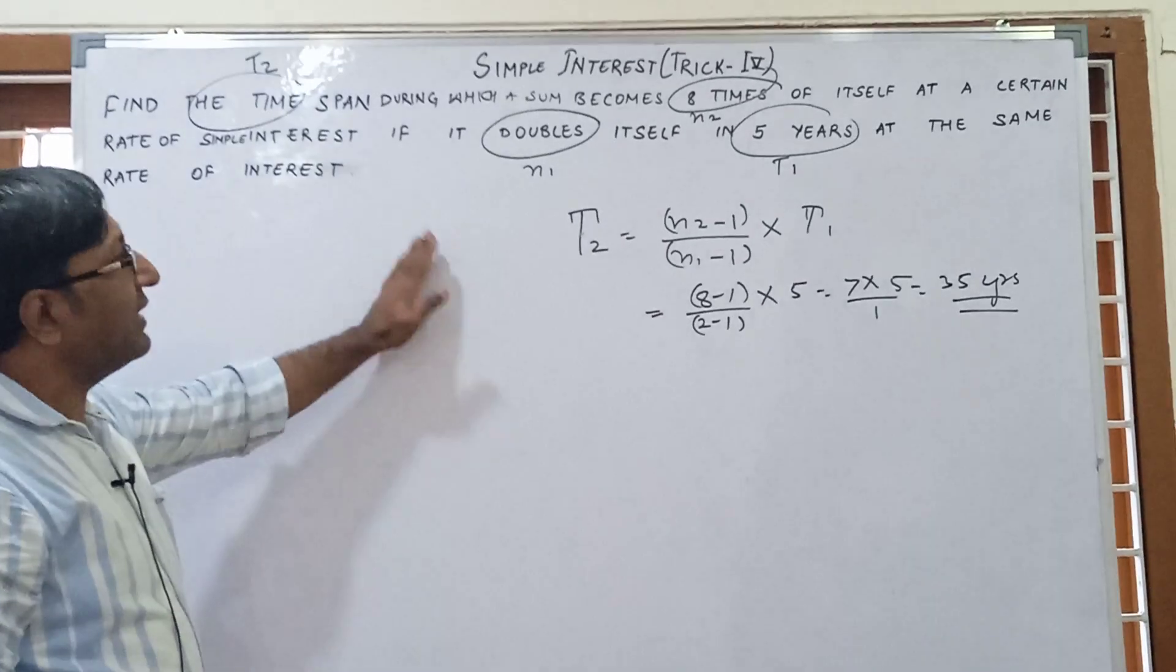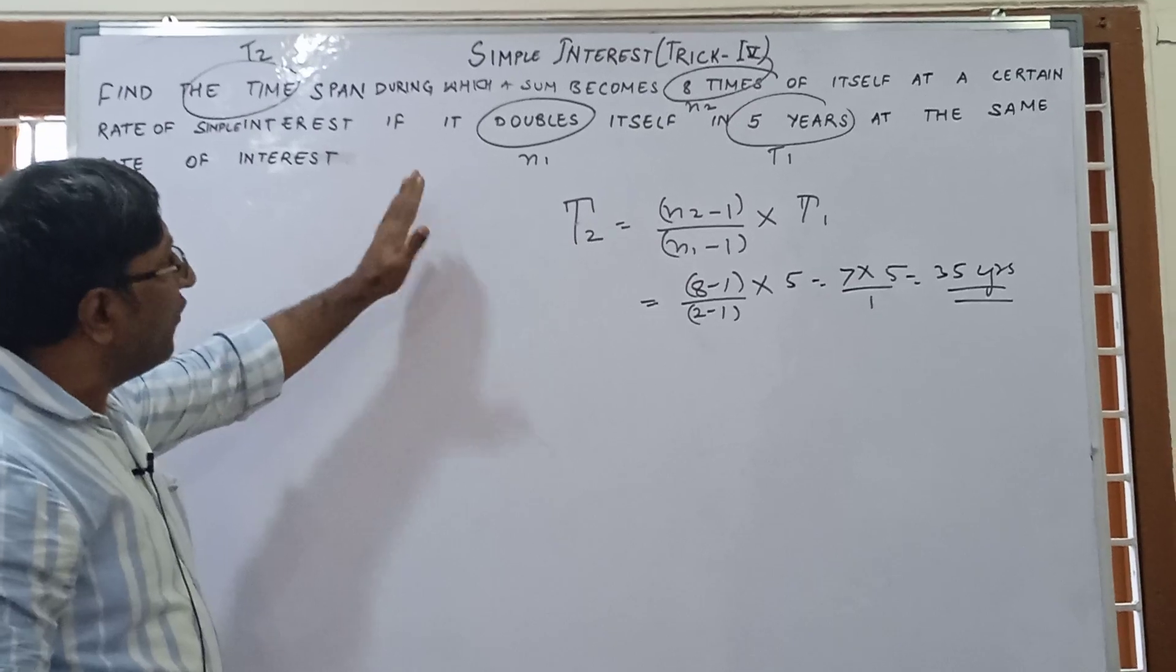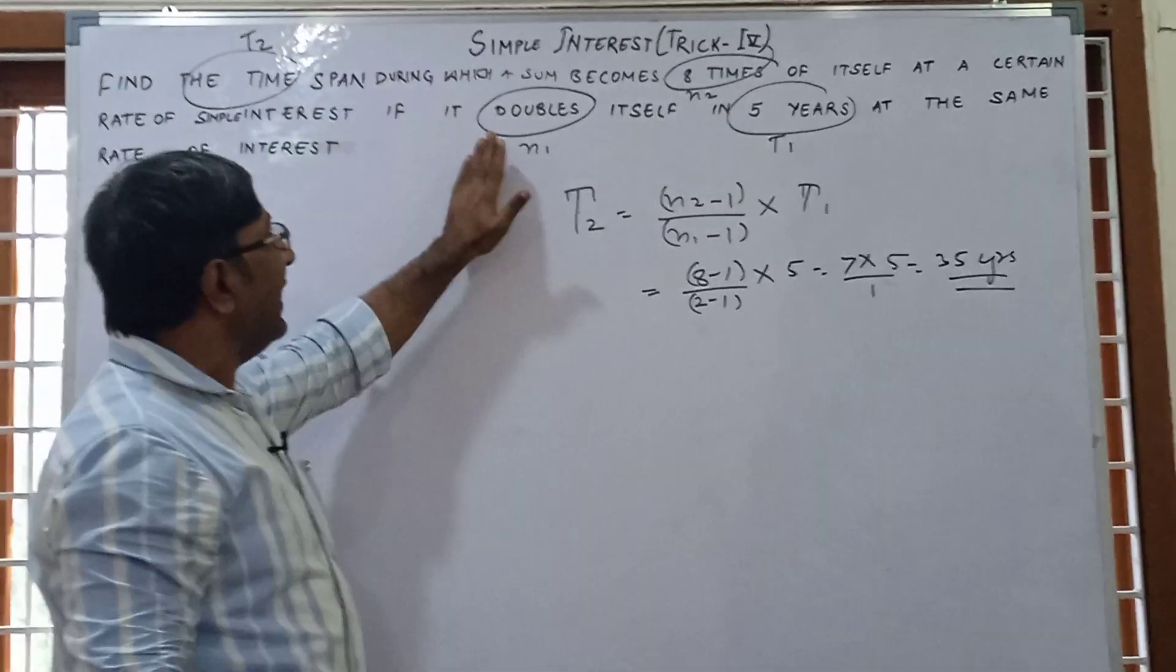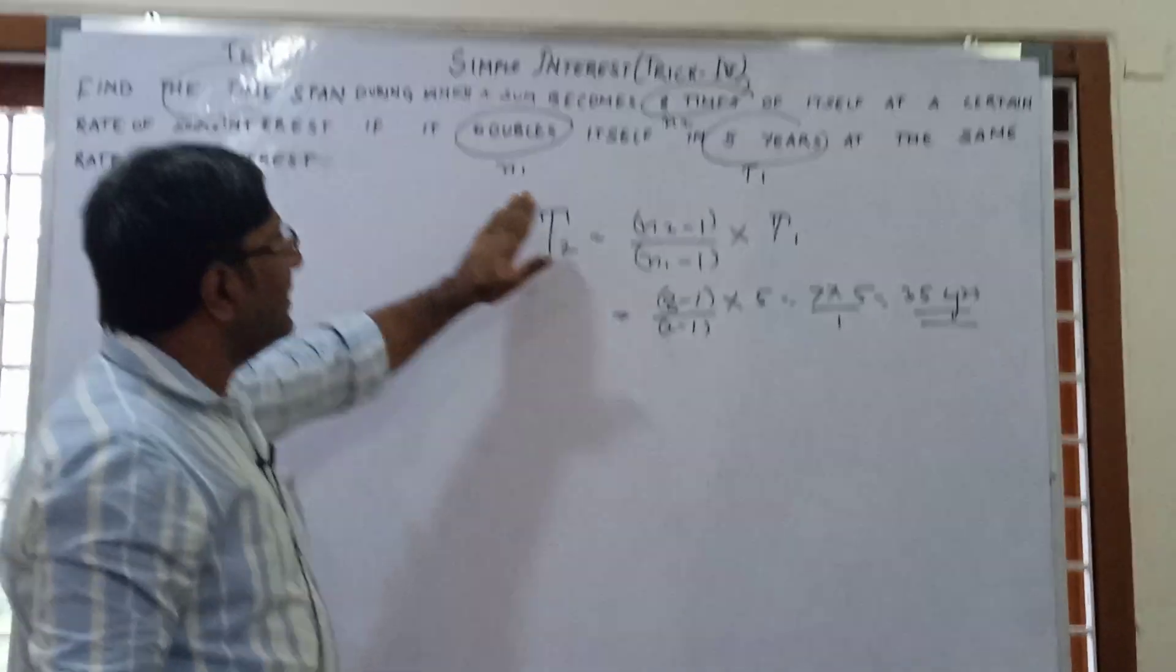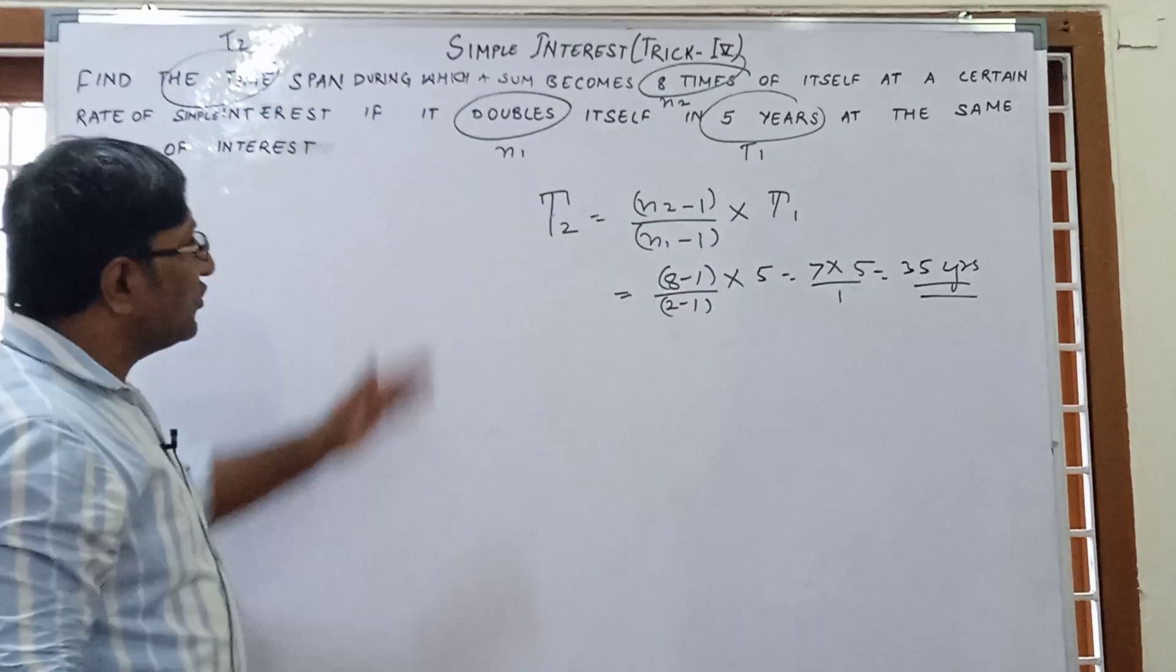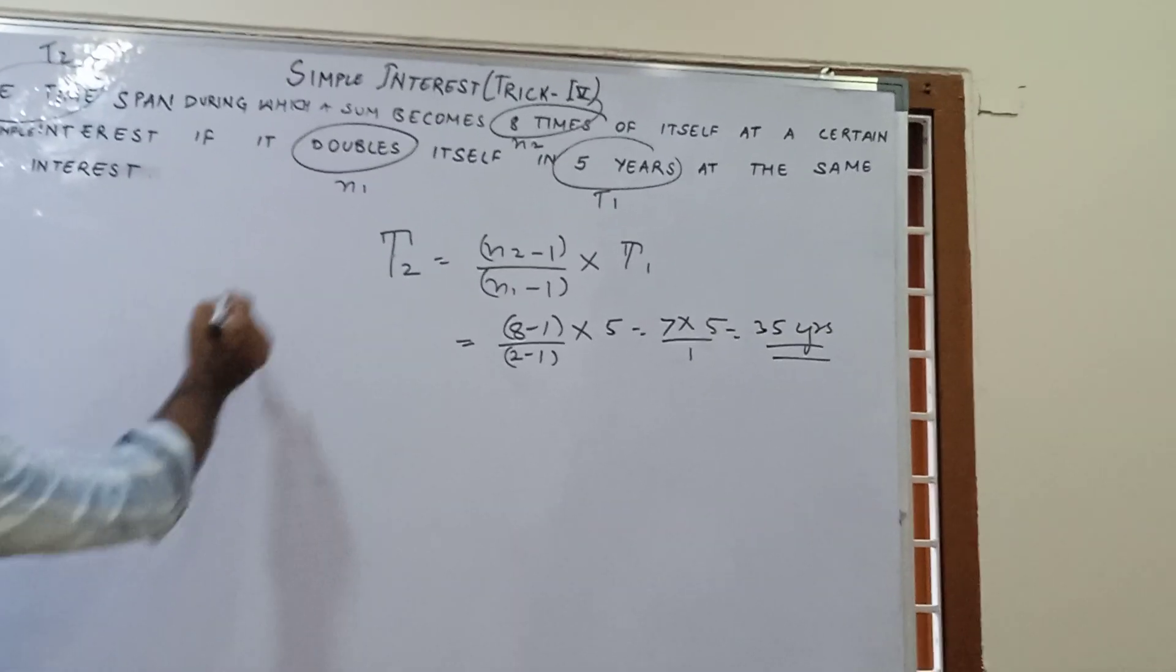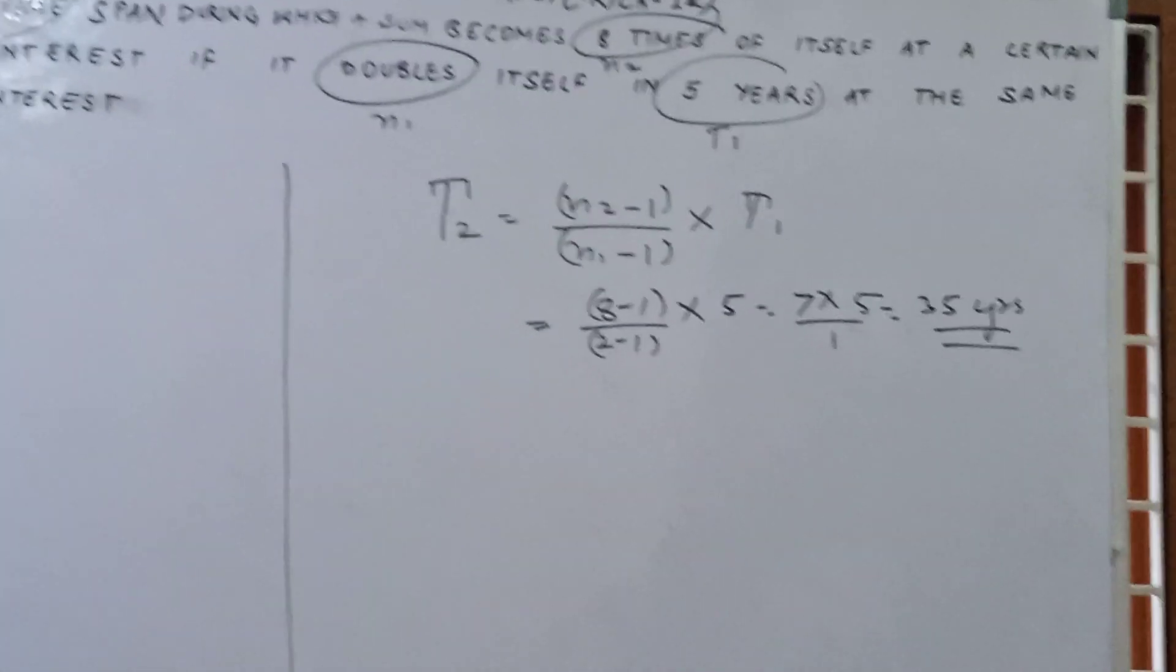This is an N type of question. Just use this: what is given and what is required. First case N1 times, second case N2 times, and the time period is given, then apply the formula. We can solve this question by the basic method also.